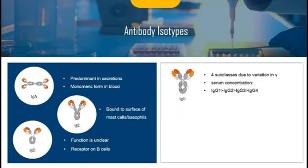IgG is the most thoroughly studied of all five isotypes, and recombinant antibody engineering is based on it. Human IgG consists of four subclasses, numbered in order of their serum concentrations: IgG1, IgG2, IgG3, and IgG4. The chief distinguishing characteristic among the four IgG subclasses is the pattern of inter-chain linkages in the hinge region.